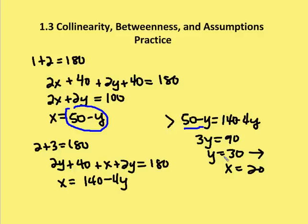Now that I have y equal to 30 degrees, I can plug it back into any of the equations to solve for x. So 140 minus 4 times 30, which is 120, gives us 140 minus 120 is equal to 20. That's the value for x.